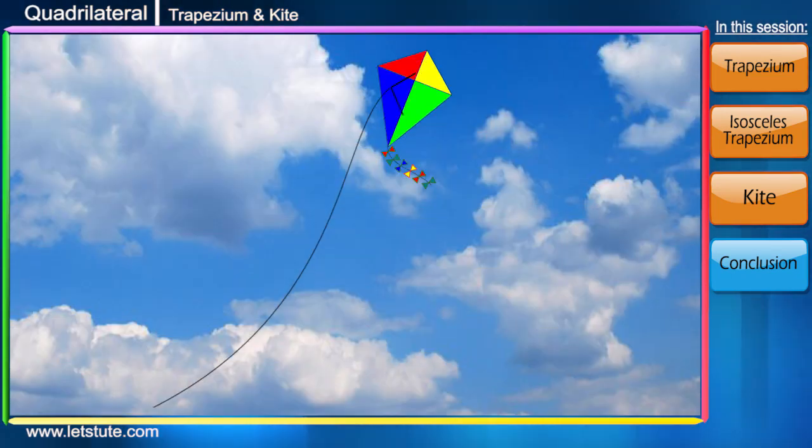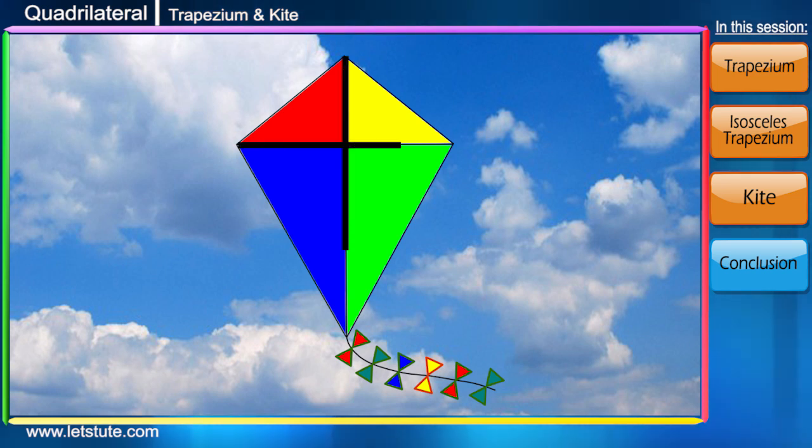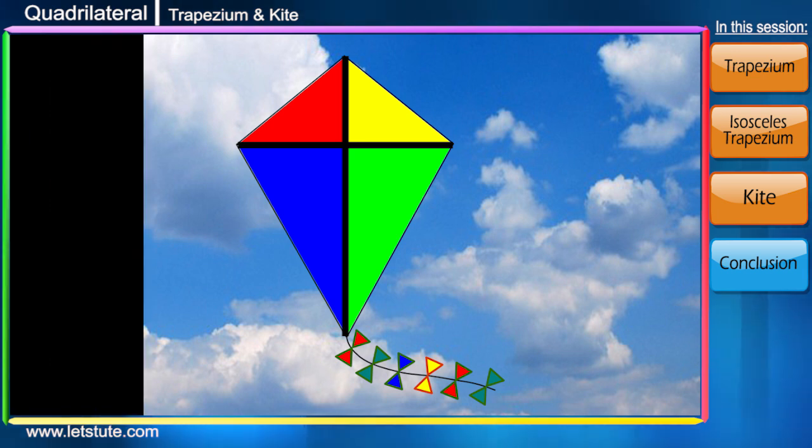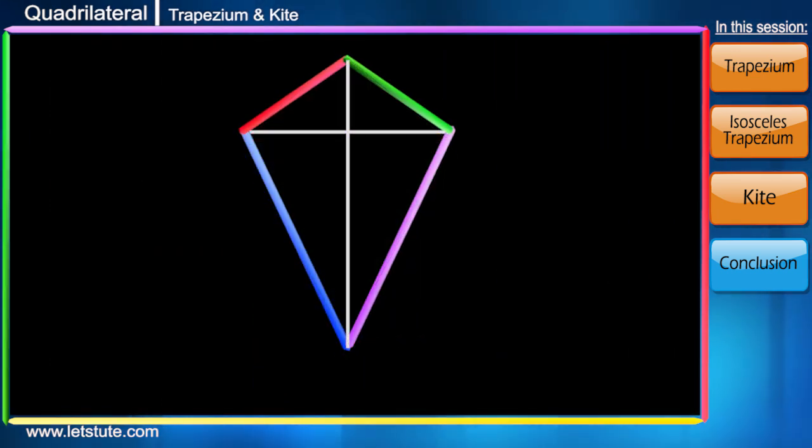We've all seen a kite flying in the sky. In a kite there are two main sticks which help in the kite flying. Friends, try to make the shape of a kite along with me with these Mikado sticks and write whatever you observe.